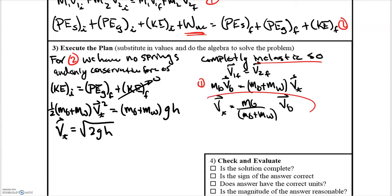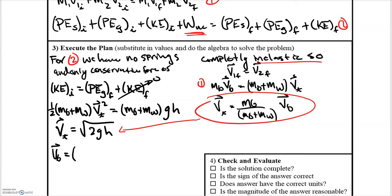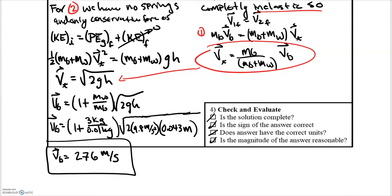We're almost there — we use the expression from part one, substitute it in, and solve for the bullet's initial velocity. Substituting in and solving gives: v_bullet equals (1 + m_wood / m_bullet) times root(2gh). Substituting our values in, we find the velocity of the bullet is 276 meters per second.